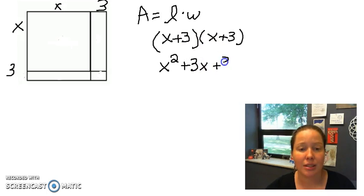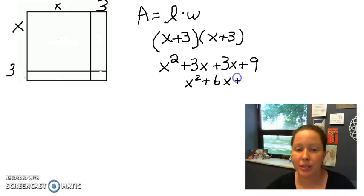We'd multiply the inners and get 3x and we'd multiply the last terms and get 9. And when we combine the like terms in the middle there we get x squared plus 6x plus 9. Beautiful, right? So that is the area of this entire figure.